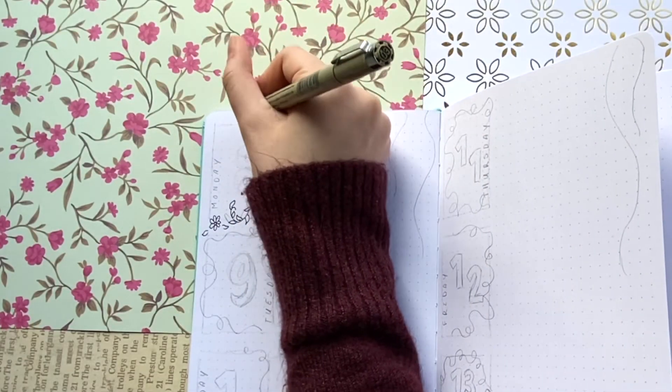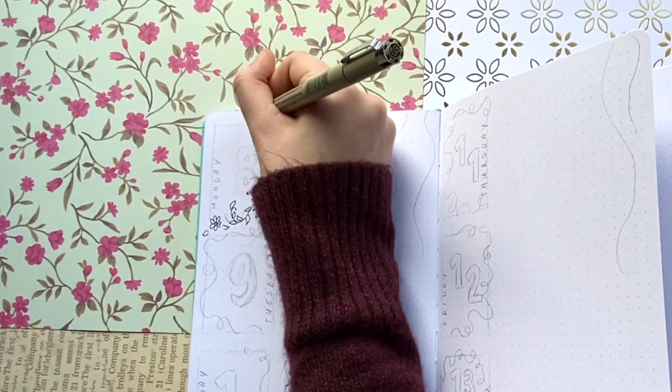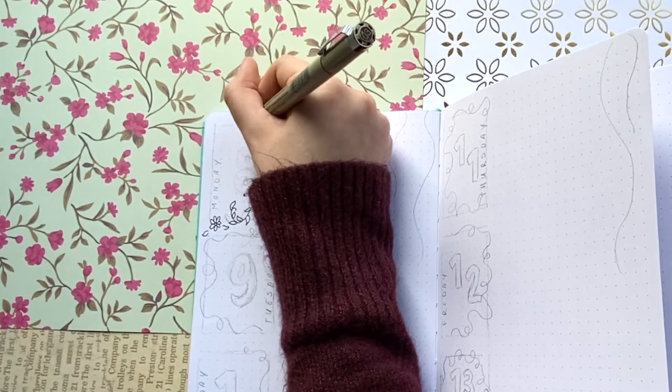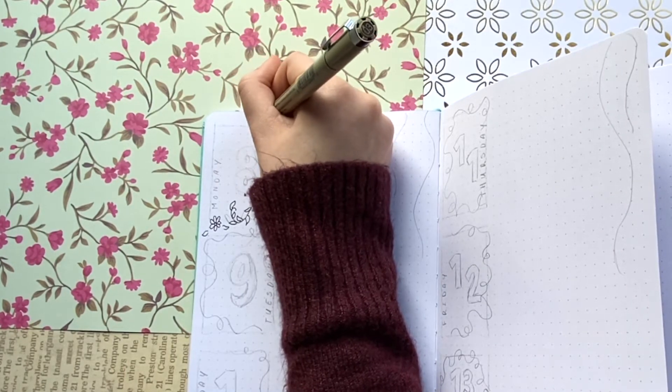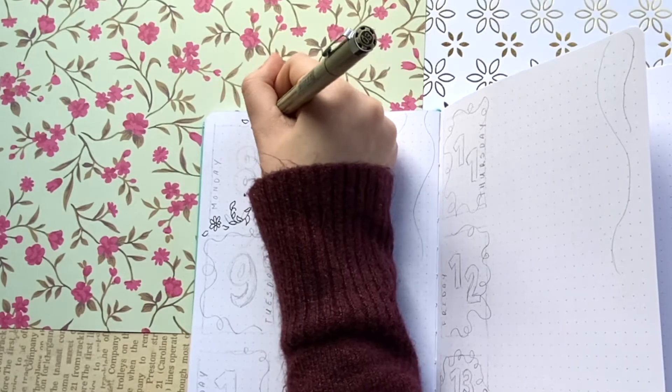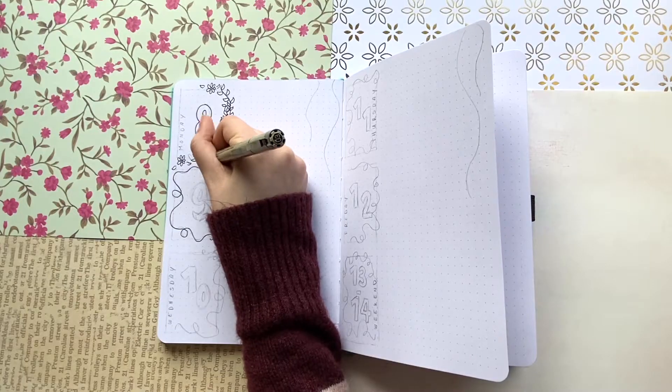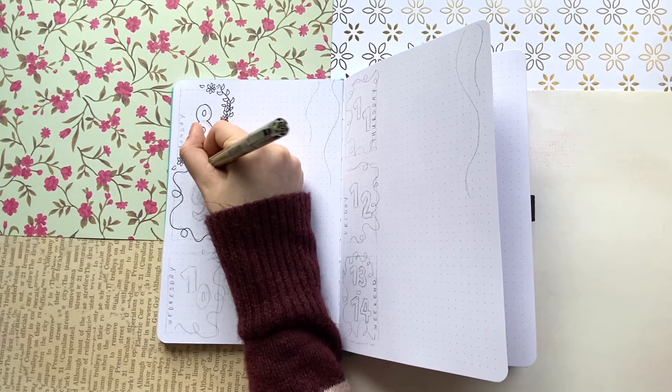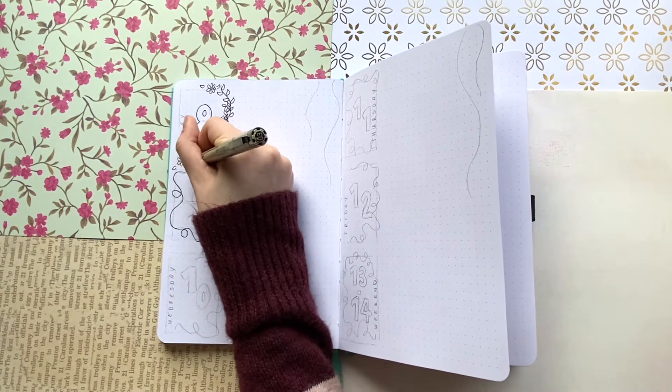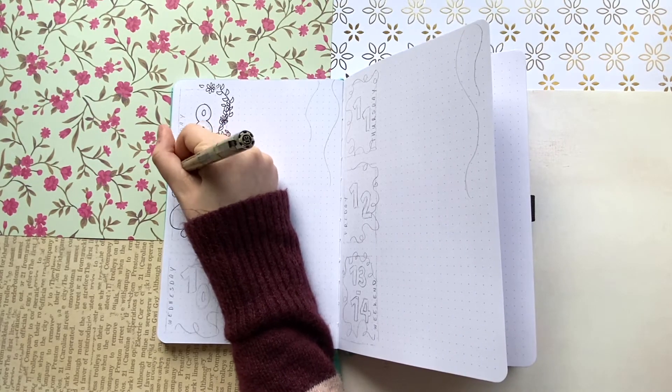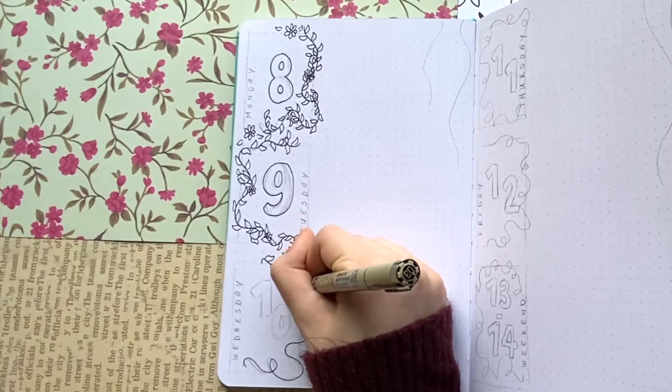So for today, I'm going to be showing you guys how I tackle my vine and flowers theme as well as other various ways you can tackle it yourself. First of all, the weekly spread that I'm doing: very simple boxes surrounded in the basic vines that I draw, with some bubble numbers and a very simple font for the days of the week.